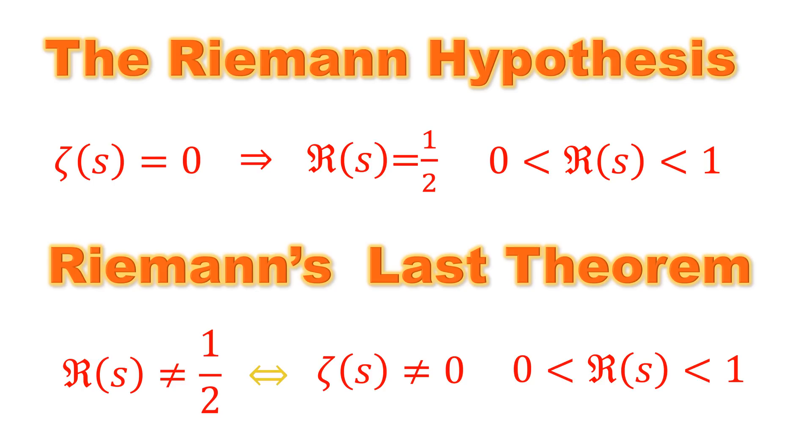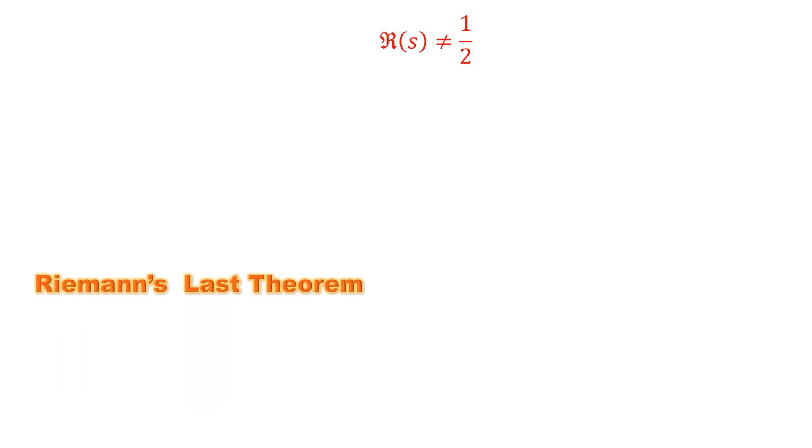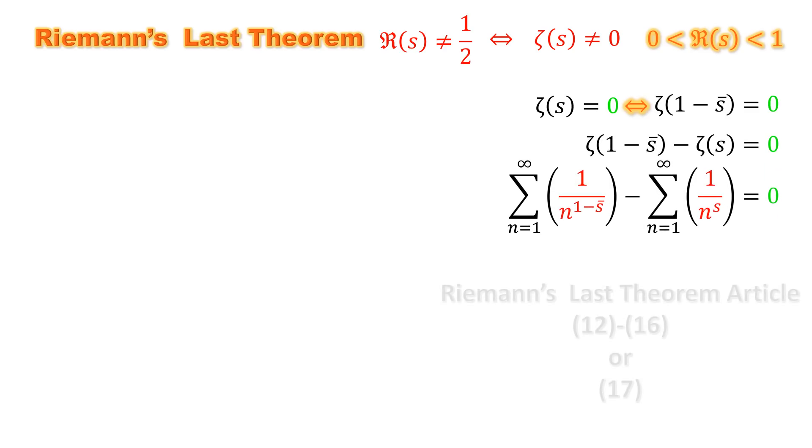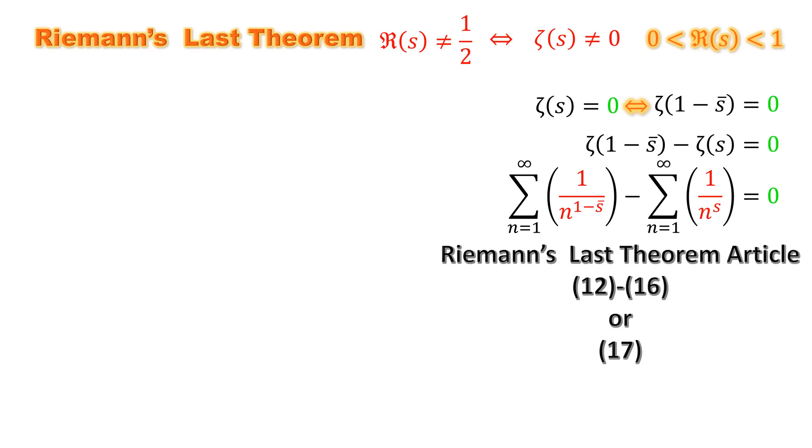Note that the following functions and arguments are restricted to the critical strip. We know that if the zeta function equals zero, we can say zeta of one minus s conjugate equals zero as well. That means we can say this or this. You can find further detail for this argument in Riemann's last theorem article.